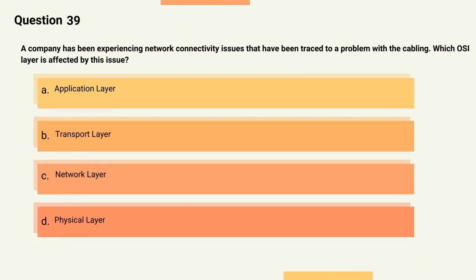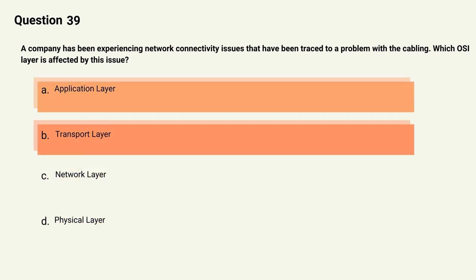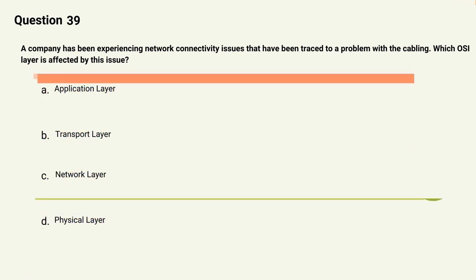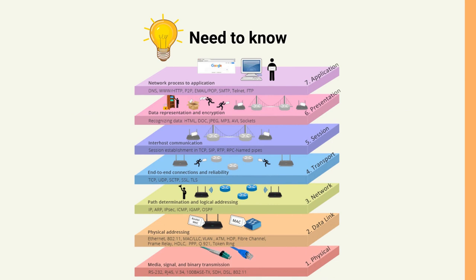Question 39: A company has been experiencing network connectivity issues that have been traced to a problem with the cabling. Which OSI layer is affected? Options: A) Application layer, B) Transport layer, C) Network layer, D) Physical layer. The correct answer is Option D, Physical layer. Explanation: The physical layer of the OSI model deals with the transmission of data over physical mediums such as cables.